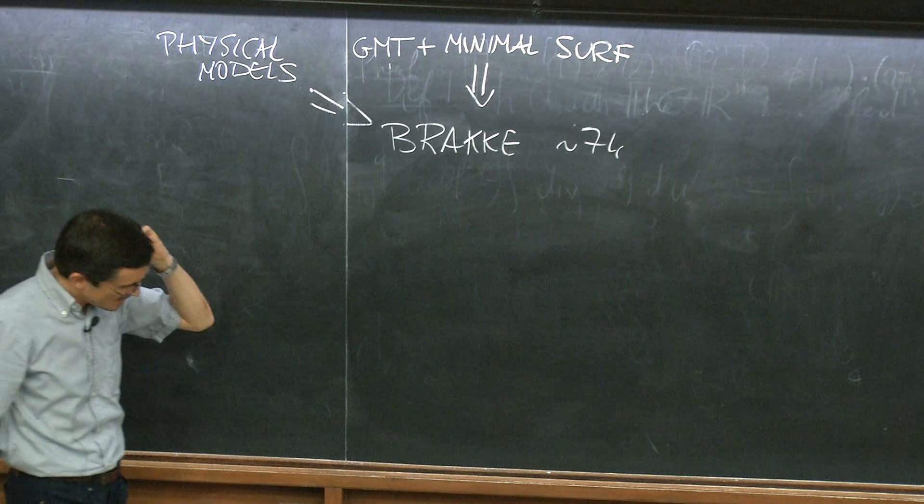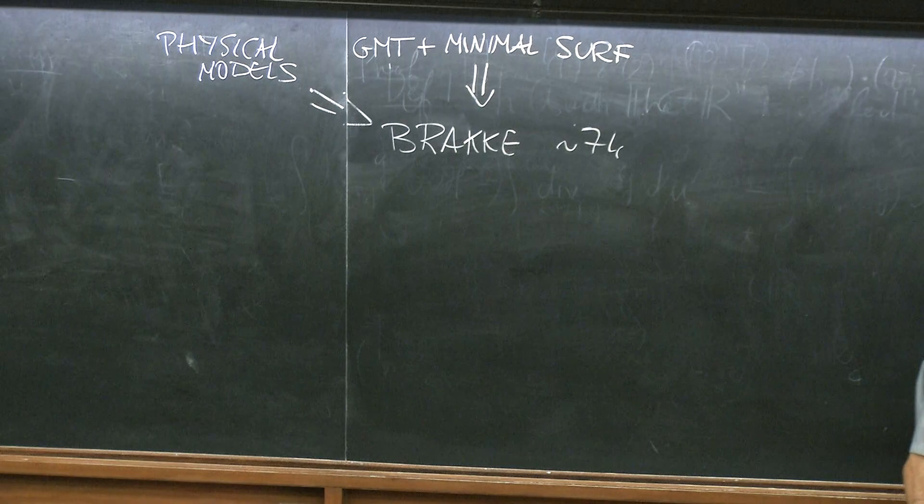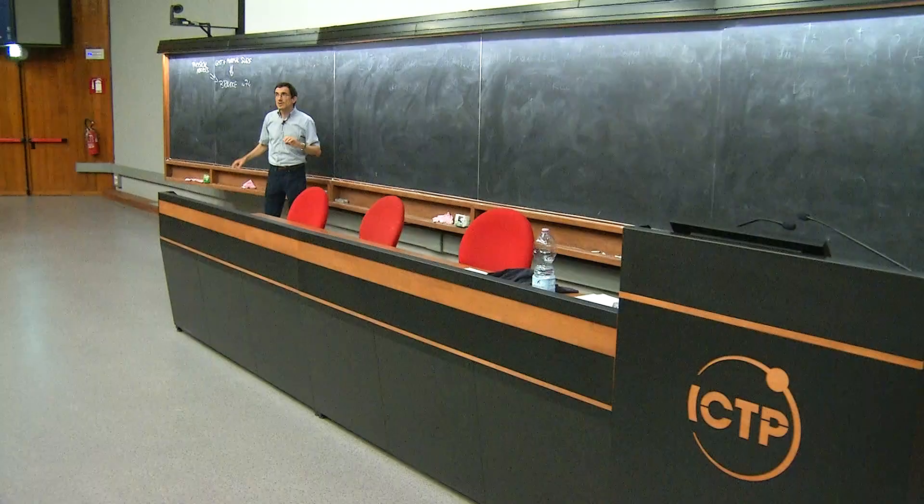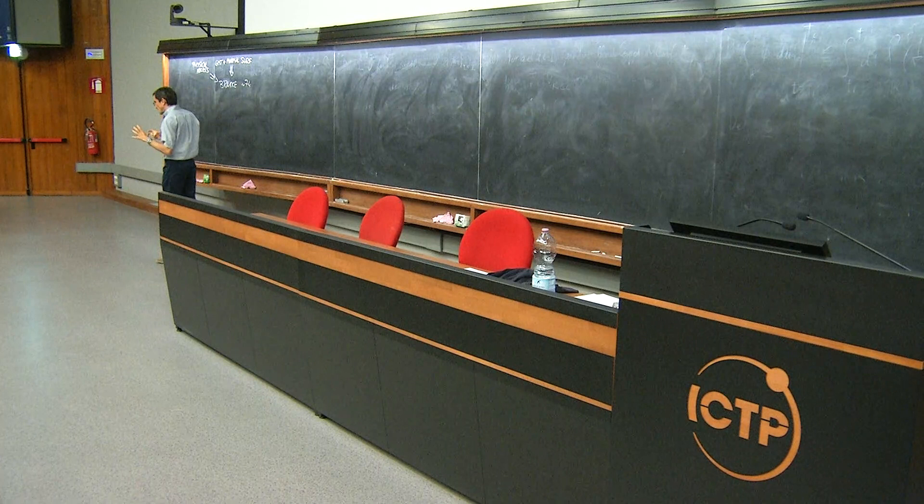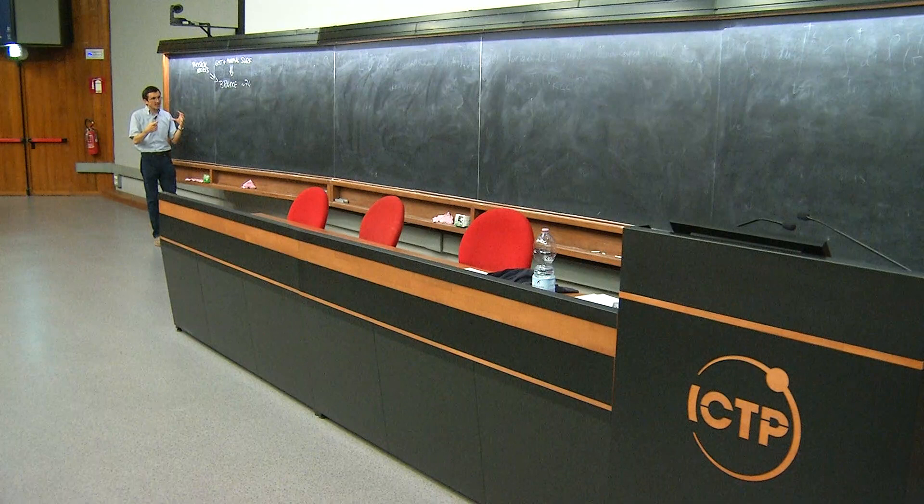In fact, there was already a paper in the 1950s by a person named Mullins, who considered in the plane self-similar solutions of the mean curvature flow. He was motivated by a certain phenomenon of metals, where some interface was evolving by mean curvature flow.